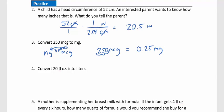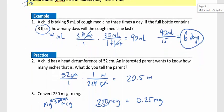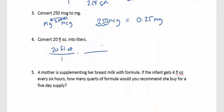Question 4: Convert 20 fluid ounces into liters. From our chart, 32 fluid ounces is approximately equal to 1 liter. We write 20 fluid ounces as a fraction, divide out the fluid ounces, and introduce liters. So we divide 20 by 32, which gives us 0.625 liters.